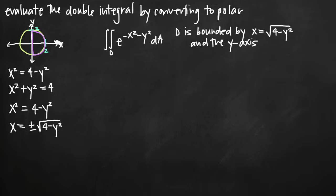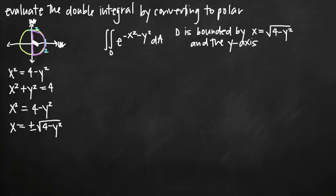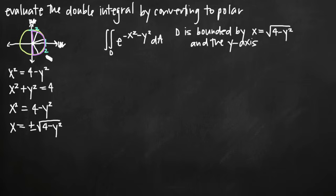Now in order to get limits of integration for this region in terms of r and theta in the polar coordinate system, let's pretend this is no longer a Cartesian system. In a polar coordinate system, r is always the distance of the point from the origin — at the origin r equals 0, and moving out to the edge of the circle, r equals 2. So the lowest value r can attain is 0 and the largest value, given this bounded region, is 2.